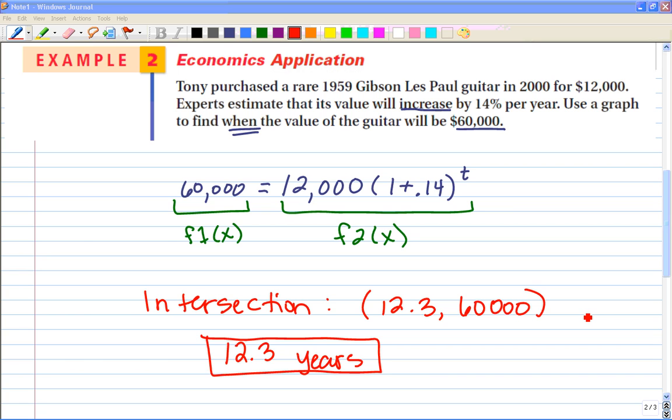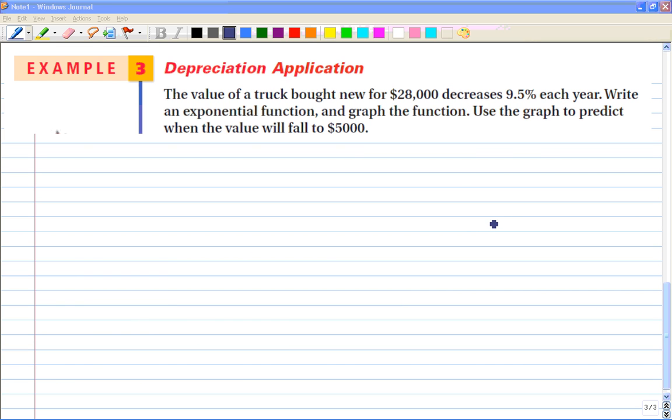Now let's look at another example. Here's example 3 from your textbook in chapter 7-1. The value of a truck bought new for $28,000 decreases 9.5% each year. Write an exponential function and graph, then use the graph to predict when the value will fall to $5,000.